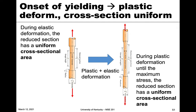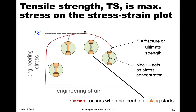However, at the value of the tensile strength, we start to see that uniform cross-section go away — it no longer has a uniform cross-sectional area. Here's our engineering stress-strain plot. You see it goes up linearly initially, and around here is the yield strength where it deviates from linear behavior. In both elastic and plastic regions, it's uniform, until we get to the maximum point M, which is defined as the tensile strength.